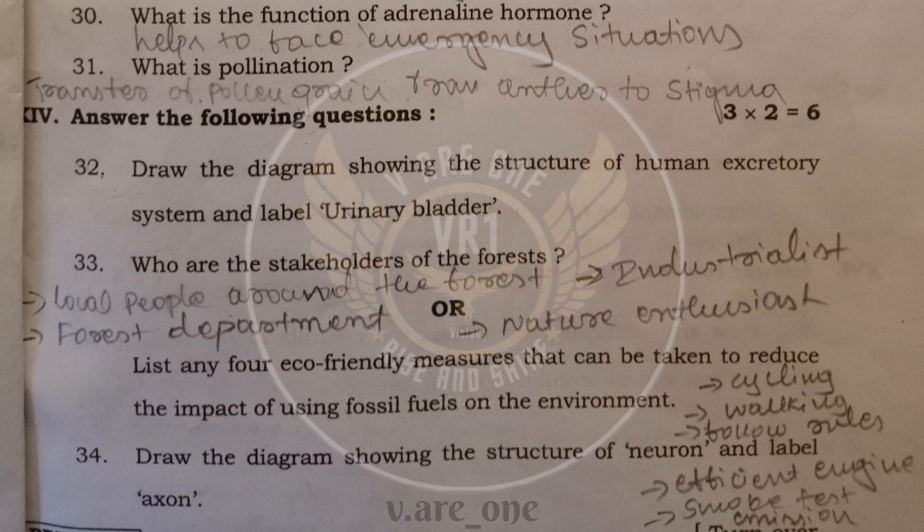And 33rd, who are the stakeholders of the forest? Stakeholders of the forest are, first one, local people which are present around the forest. And second one is industrialist. Third, forest department. And fourth one is the people who want to save the nature, are nature enthusiasts.